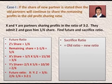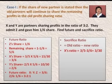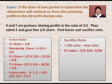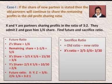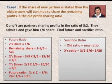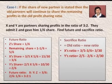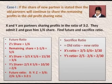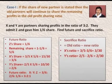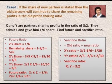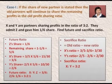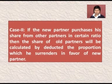The second question is to find the sacrifice ratio. Sacrifice ratio is equal to old ratio minus new ratio. In X's case, old ratio for X is 3/5 and new ratio for X is 3/6. Taking LCM of 5 and 6 as 30, X's sacrifice = 3/5 - 3/6 = 18/30 - 15/30 = 3/30. Similarly, Y's old ratio was 2/5 and new ratio was 2/6, so Y's sacrifice = 2/5 - 2/6 = 12/30 - 10/30 = 2/30. So the sacrificing ratio of X:Y is 3:2.